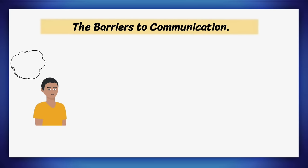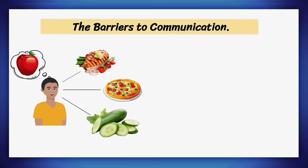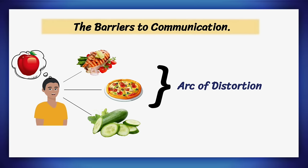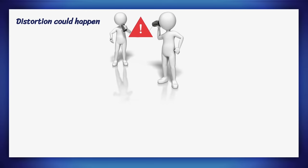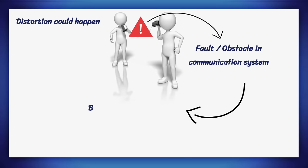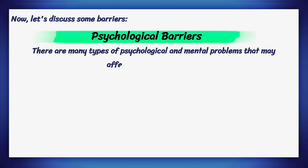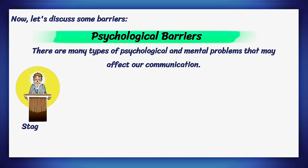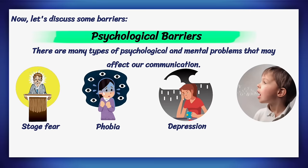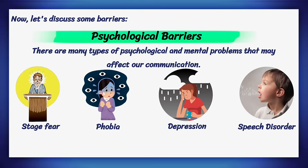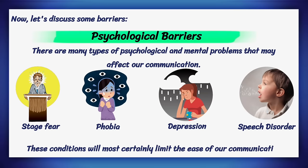Now let's discuss the barriers to communication. A person wants to communicate one thing, but sometimes communicates something else entirely. This is called the arc of distortion, which could happen due to some defect in the mechanism of communication. These obstacles are known as barriers to communication. Psychological barriers: there are many types of psychological and mental problems that may affect our communication. Some people have stage fear, phobia, depression, speech disorder, etc. These conditions are hard to manage and will limit the ease of our communication.